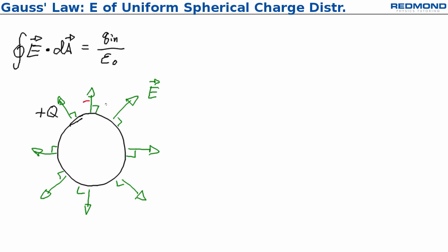To apply Gauss's law then, I'm going to draw a Gaussian surface in red, and I'm going to use a spherical Gaussian surface, and you generally want to use the same shape as the charge distribution, and the reason for that is to make the math easier.